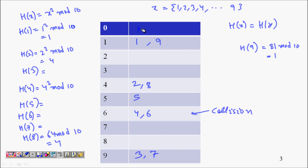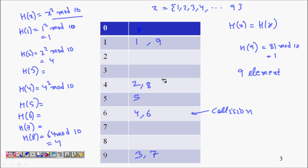So with 9 elements and 9 cells, we still had collisions because of the hash function. In fact, there were 4 collisions.